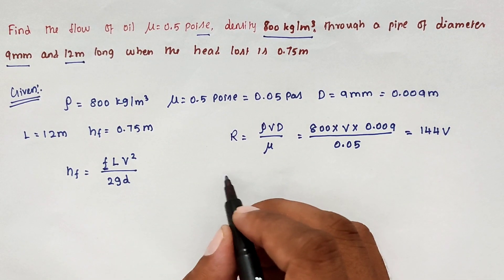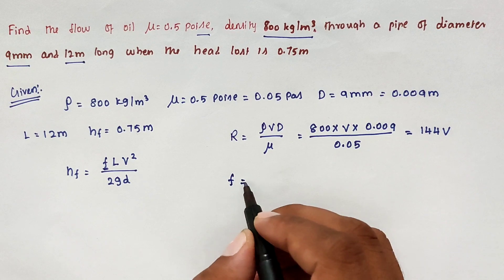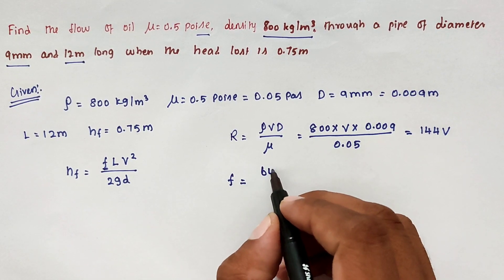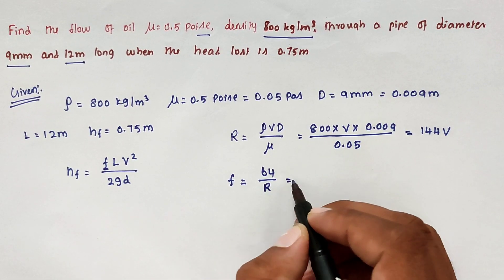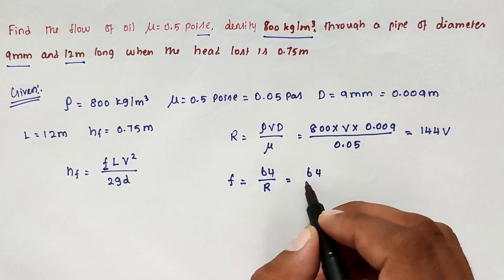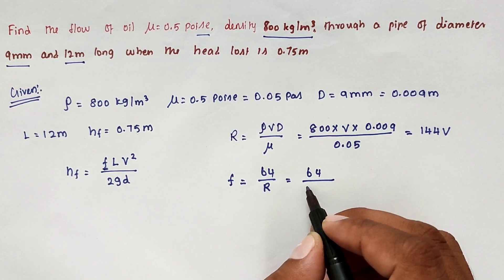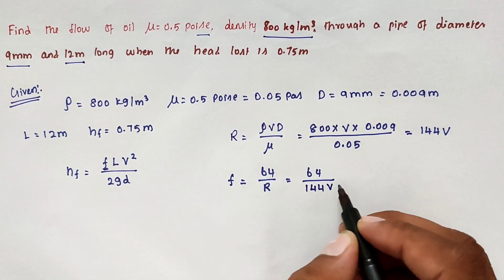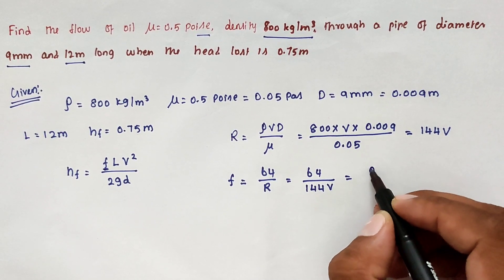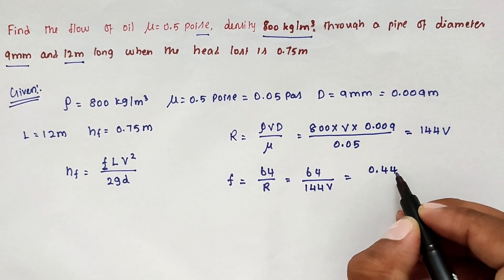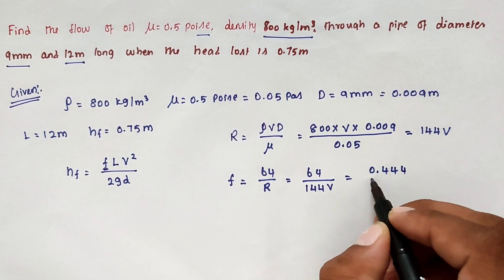From that relationship we can find out the f value. F equal to 64 divided by R. Now we can substitute 64 divided by 144 into V. From that we can get the value of 0.444 divided by V.